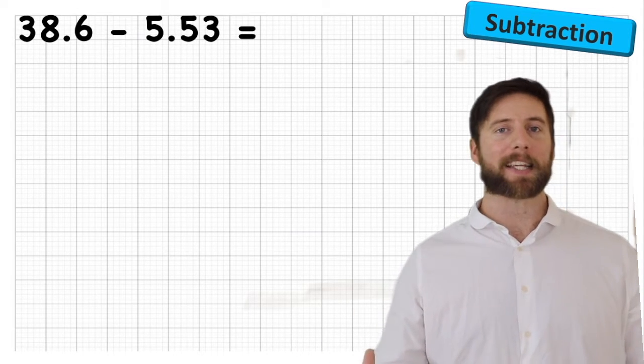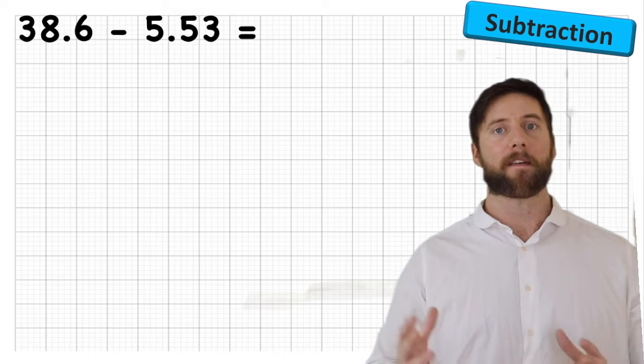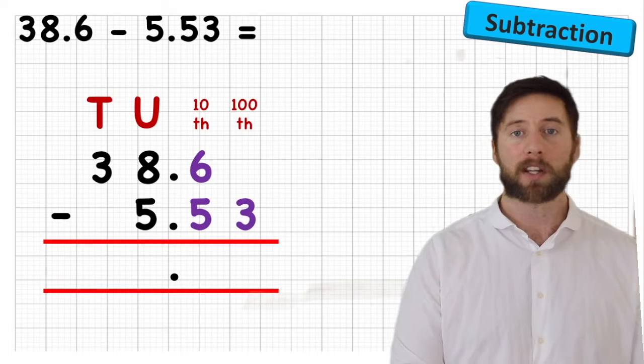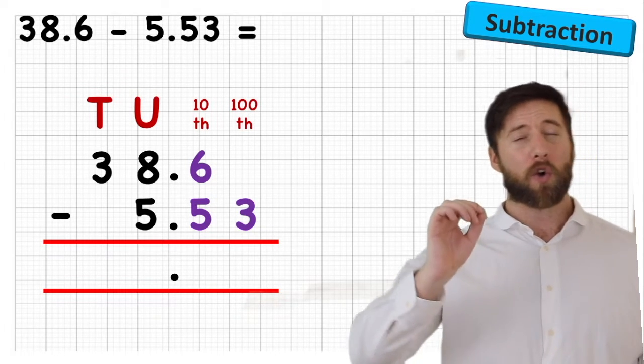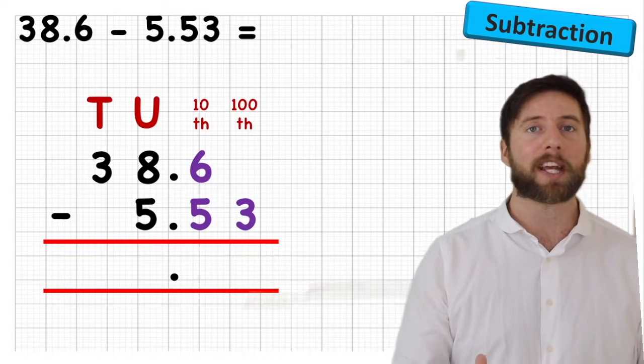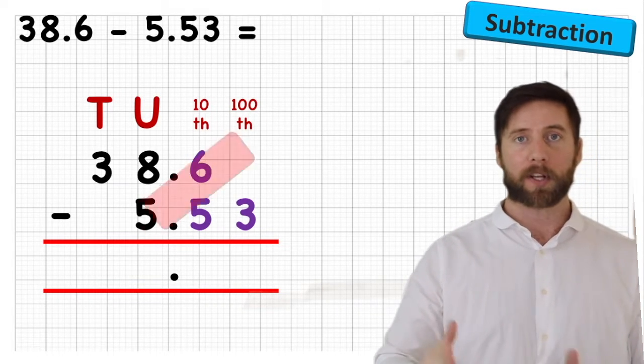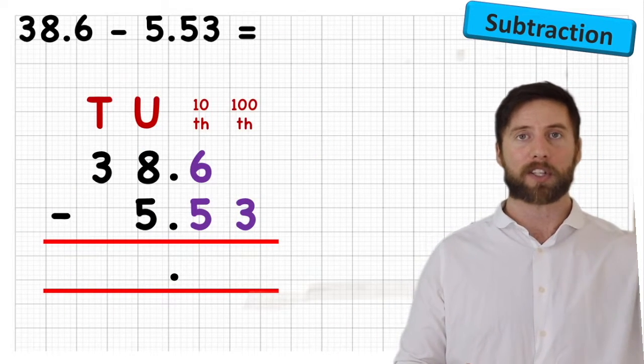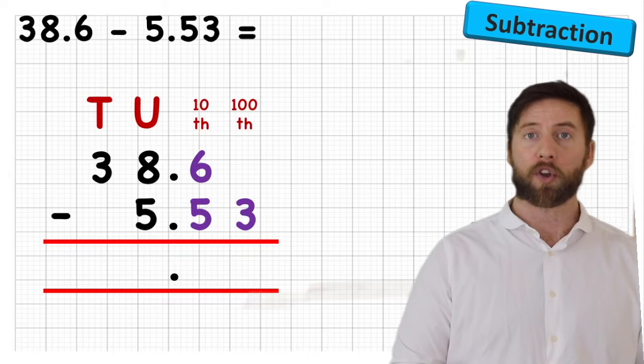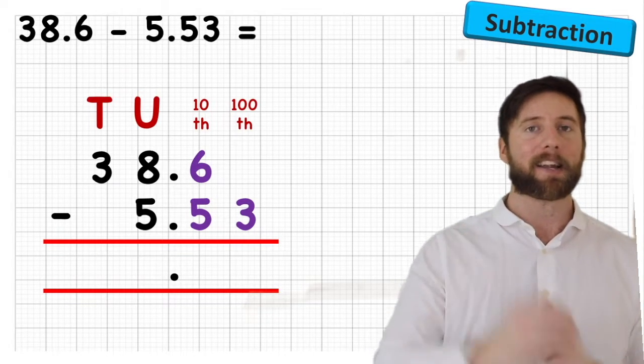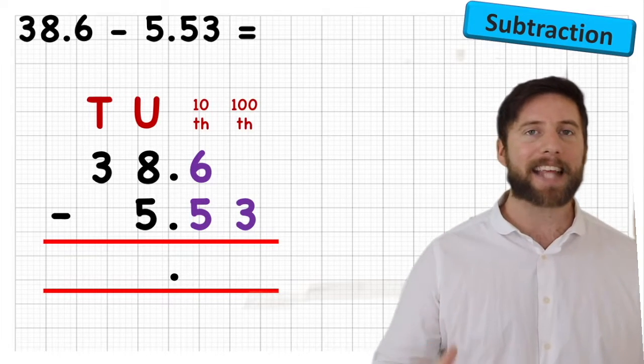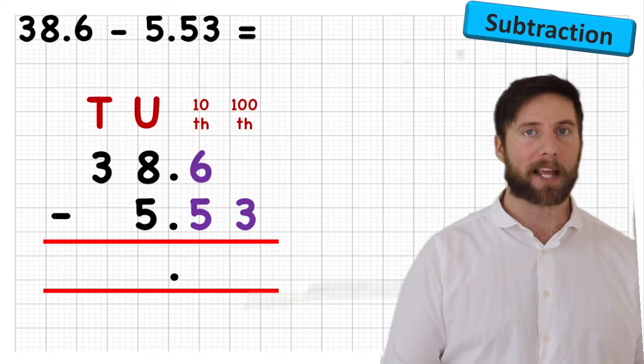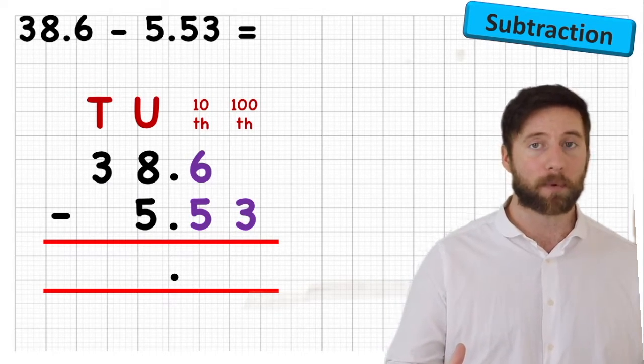So let's check out subtraction. Let's have a look at 38.6 subtract 5.53. Now, the good news is we're just going to use exactly the same idea of laying everything out in columns. The bad news is we've got to be ultra careful here. Because subtraction is not commutative. If the question says 38.6 subtract 5.53, we have to do it that way around. And the 38.6 will go at the top, subtract 5.53 will go underneath. And the second thing, the one that everybody makes mistakes on at some point, is forgetting to put in our placeholders.